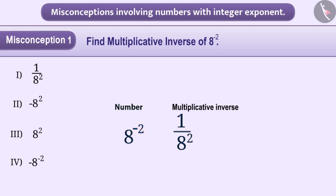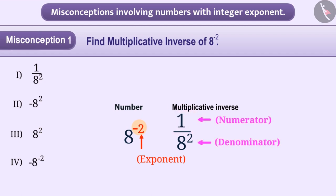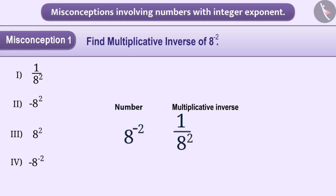Some children get confused when the exponent is negative. They think that to write a multiplicative inverse of an exponential number such as 8 to the power minus 2, the number is written by replacing the numerator by 1 and the denominator, with the exponent written after changing the sign. With this understanding, they get a multiplicative inverse of 8 to the power minus 2 as 1 upon 8 to the power 2, and choose option 1 as the answer, which is incorrect.